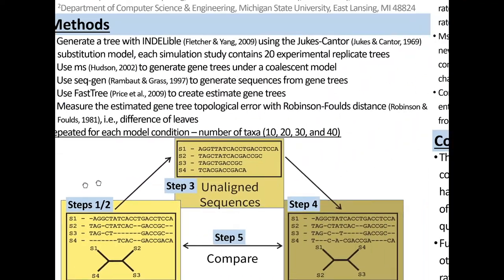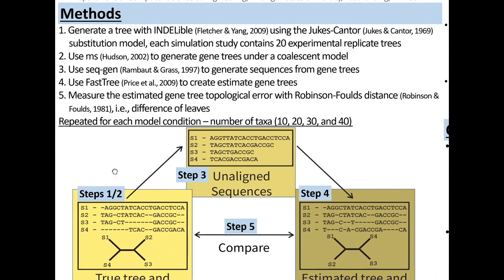I will be doing this with this methodology. I will be creating a tree with the program INDELible using the Jukes-Cantor substitution model. Each simulation study will contain 20 experimental replicate trees. I will use the program ms to generate a tree into the coalescent model.